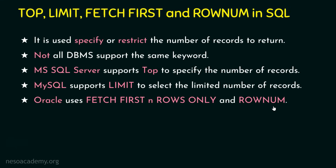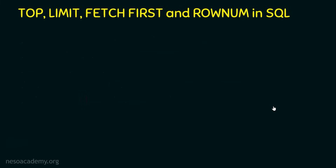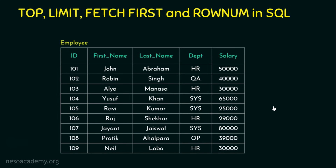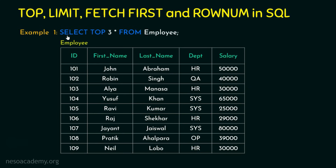Now let's start with Example 1, for which we need a table. We'll use an employee table with columns such as ID, first name, last name, department, and salary — already populated with some records. The example query is: SELECT TOP 3 * FROM employee. The asterisk indicates all columns, but we can specify particular columns if needed.